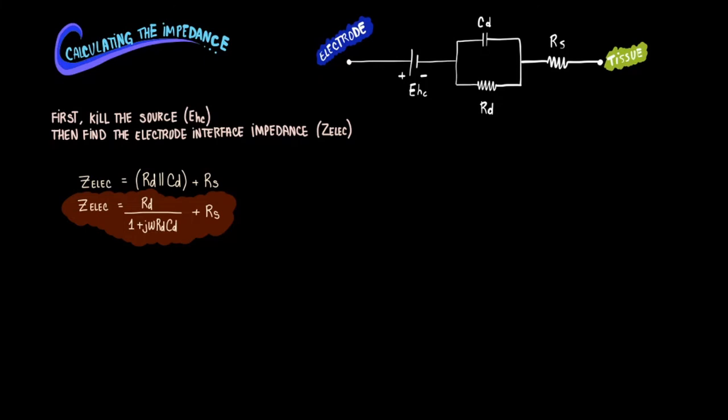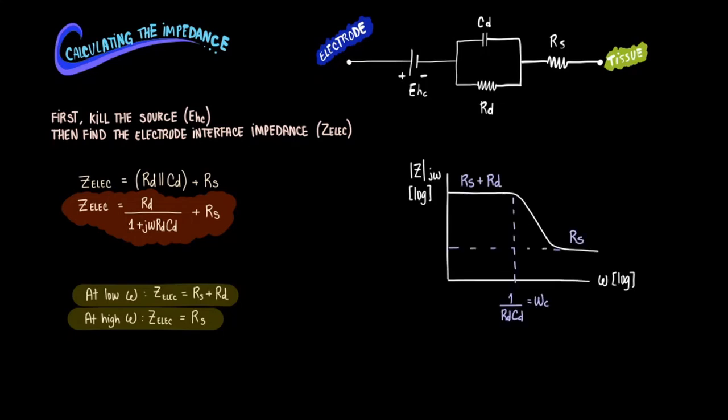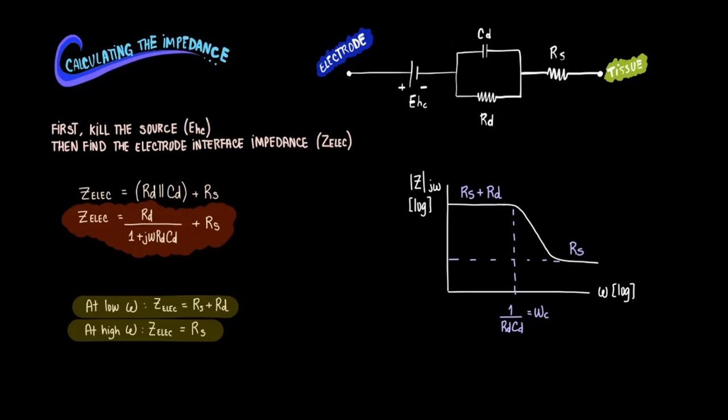This impedance would mean that at low frequencies the impedance simplifies to RS plus RD, and then at high frequencies this impedance simplifies to RS. We can also show this graphically using tools we learned in earlier videos. As the frequency increases you see that the impedance will drop from RS plus RD to simply RS.